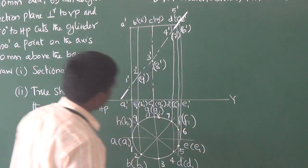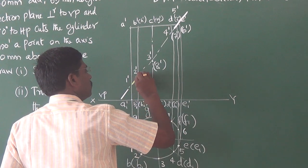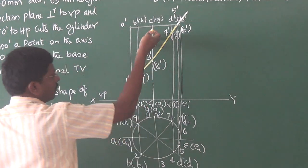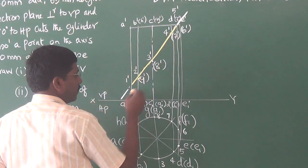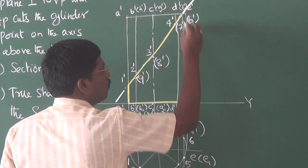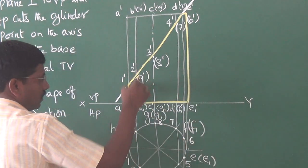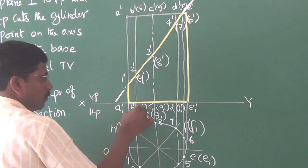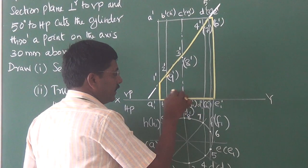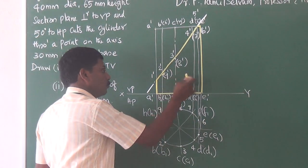Now I have to connect the cutting points by straight line: 1 to 2, 2 to 3, 3 to 4, 4 to 5. This portion will be removed off, and the remaining portion I draw with H pencil — only the boundary. Because there are no edges; even though there is an edge BB1, it is an imaginary generator. Therefore, interior generators are not to be drawn with H pencil — that has to be left with 2H pencil alone.